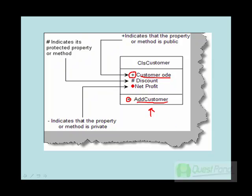The negative sign before a property or method indicates that it is private. Clients who create objects of clsCustomer will not be able to view the net profit property, for example. So it is encapsulated and protected from the outside world.